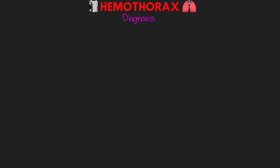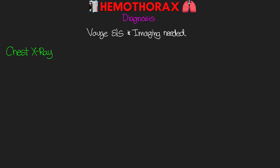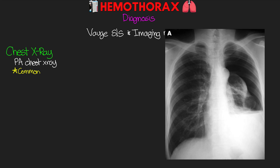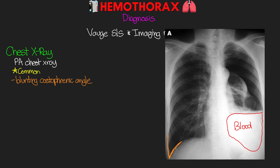Let's talk about the diagnosis of hemothorax. Just like with pneumothoraces, the signs and symptoms are vague and imaging is really going to be needed. The first is the chest x-ray — the posterior-anterior or PA chest x-ray is commonly used to diagnose a hemothorax. Here's an example of a pretty sizable hemothorax in the patient's left lung. What we're looking for is blunting of the costophrenic angle at the base of the lung on the lateral side, as well as opacification of the affected hemothorax.